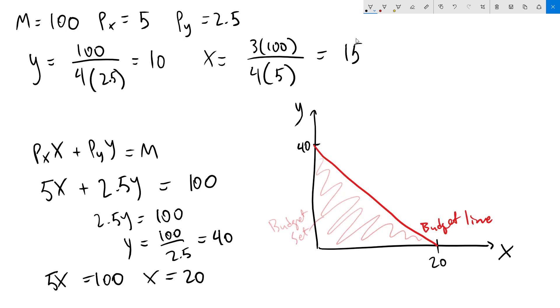This means our budget set is the whole area inside of that line. Next, we'll mark out our consumer equilibrium. We had 10y and we had 15x. So our equilibrium point is going to be right here.